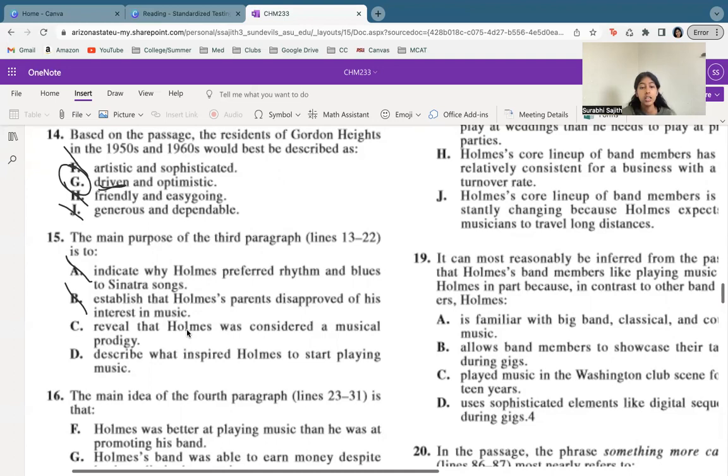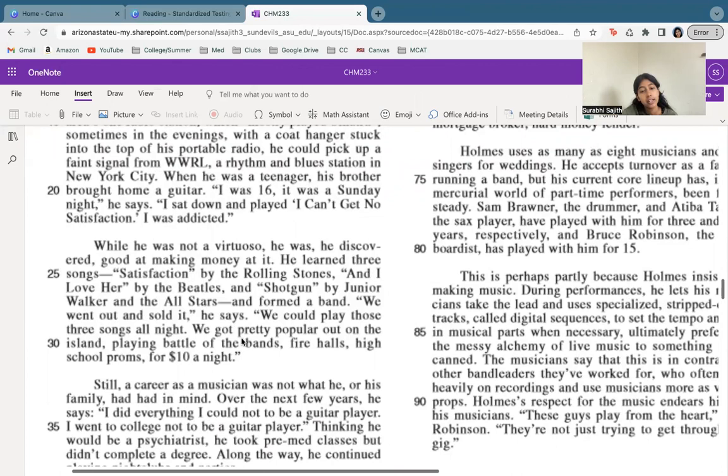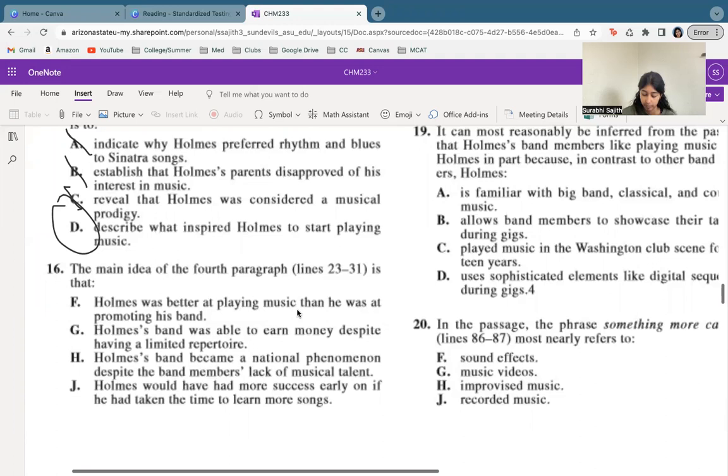So now same thing, but fourth paragraph. So this was three. So now we're at four. It talks about how he was good at it, good at making money, how he was able to kind of profit off of this.